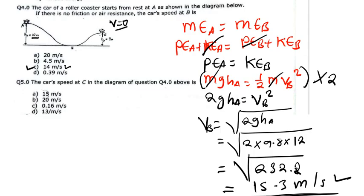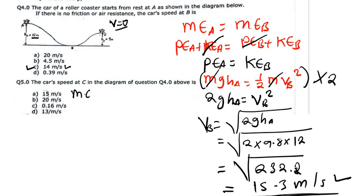Now using the same concept, we want to find the speed at point C. You can use mechanical energy at A equal to mechanical energy at C, or mechanical energy at B equal to mechanical energy at C — it will be the same. So: potential energy at A plus kinetic energy at A equals potential energy at C plus kinetic energy at C.